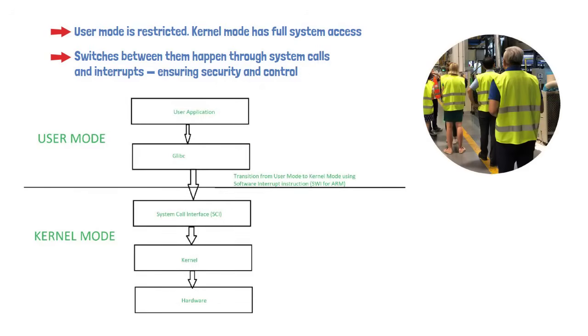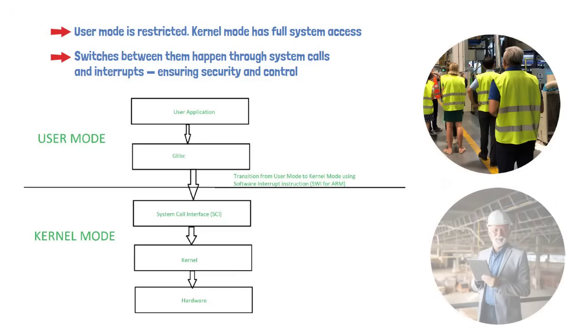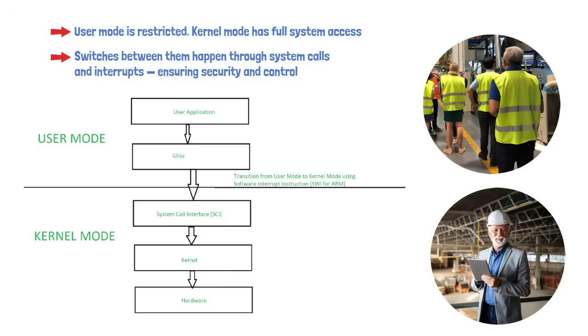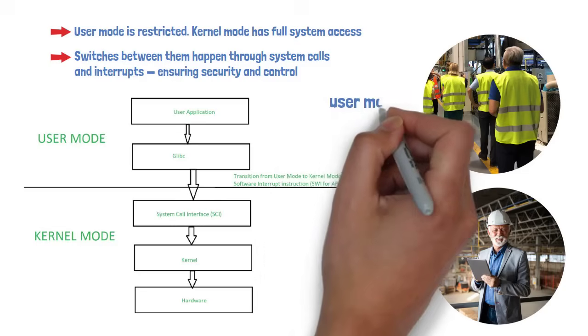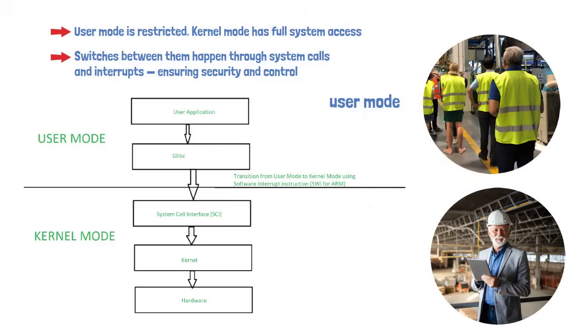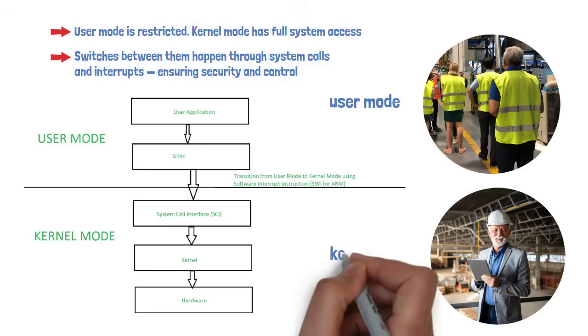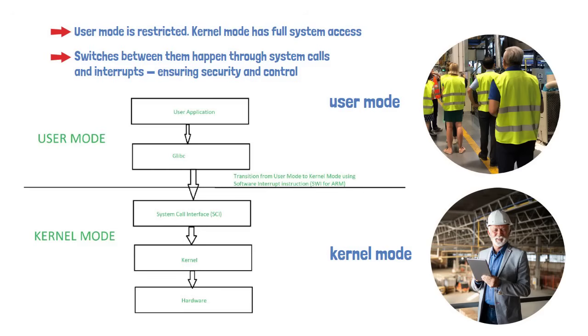It's like the difference between being a visitor at a factory versus being the factory manager. As a visitor, user mode, you can only access public areas and must ask permission for anything else. The manager, kernel mode, has a master key and can access everything, including critical control systems.